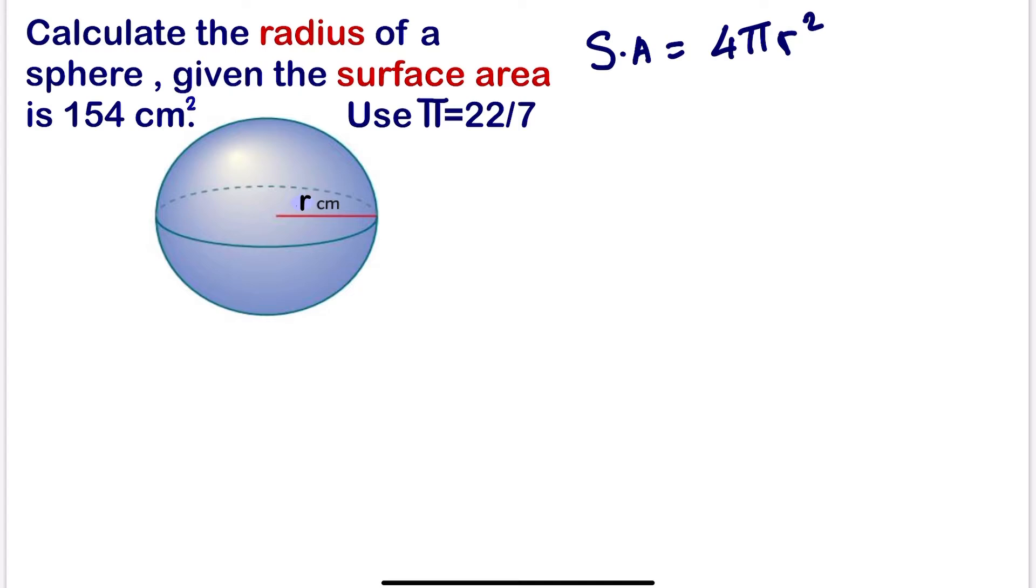So what we need to do is to substitute the value. For example, we have surface area. We are going to substitute. We have 154 should be equal to 4 times π is 22/7 times r².